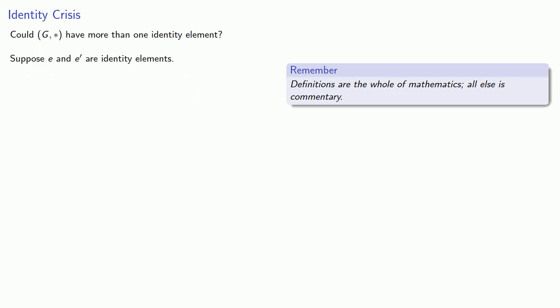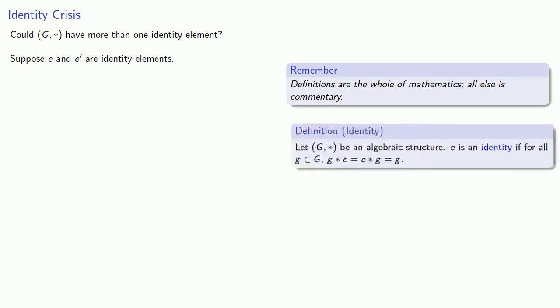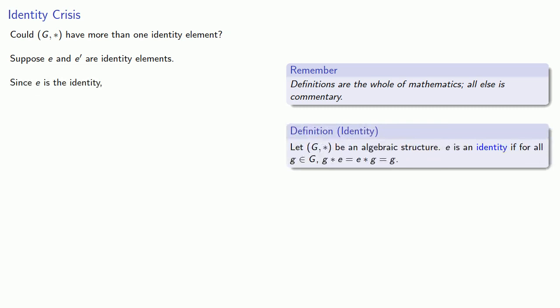Definitions are the whole of mathematics, all else is commentary. Let's pull in our definition of identity. Since E is the identity element, we know that E-star E prime has to give us E prime. But wait, if E prime is the identity, we know that E-star E prime has to give us E. But our products are both E-star E prime, and so that means the results, E prime and E, have to be equal.